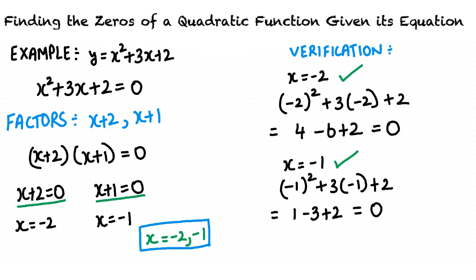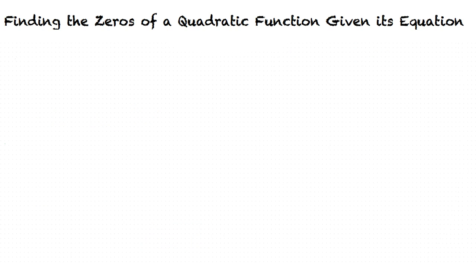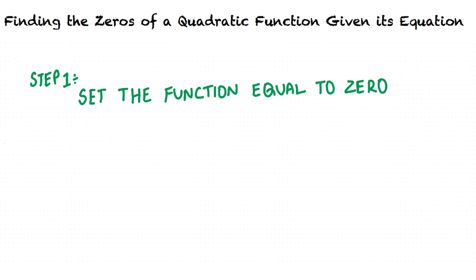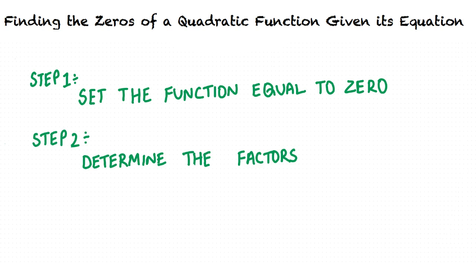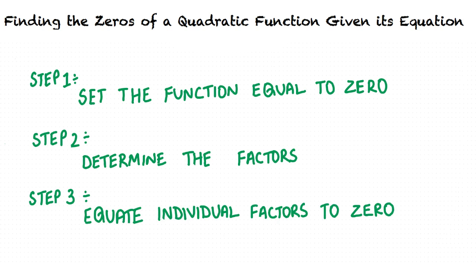Though it is not mandatory to verify the solution for each problem, it is advisable to spend an extra minute verifying just to be sure. To summarize: to find the zeros of a quadratic function given its equation, we first set the equation to zero, since we are interested in determining where the function equals zero. Next, we determine the factors of the quadratic expression. Finally, we equate the individual factors to zero in order to find the zeros of the function.